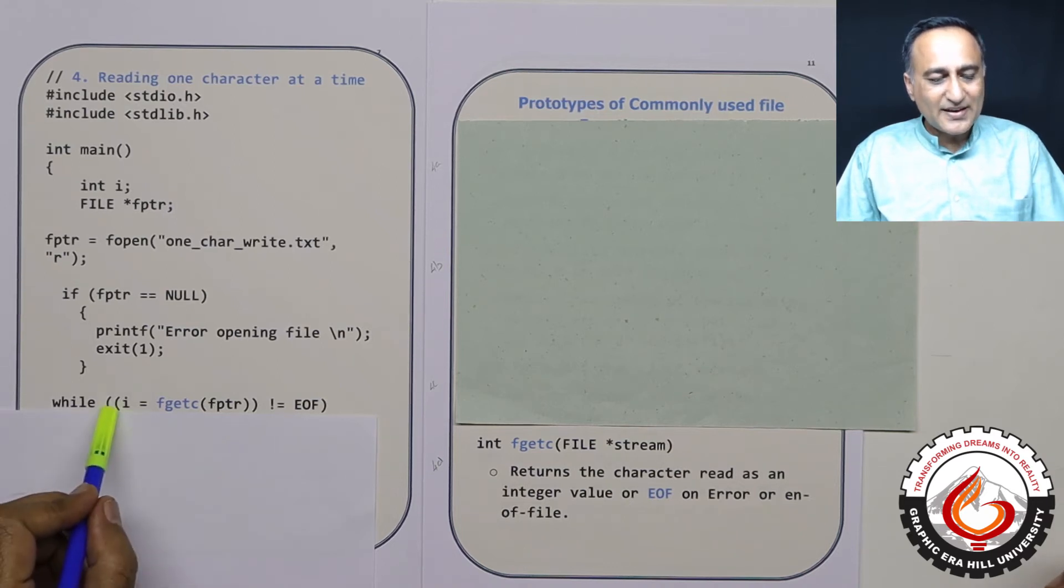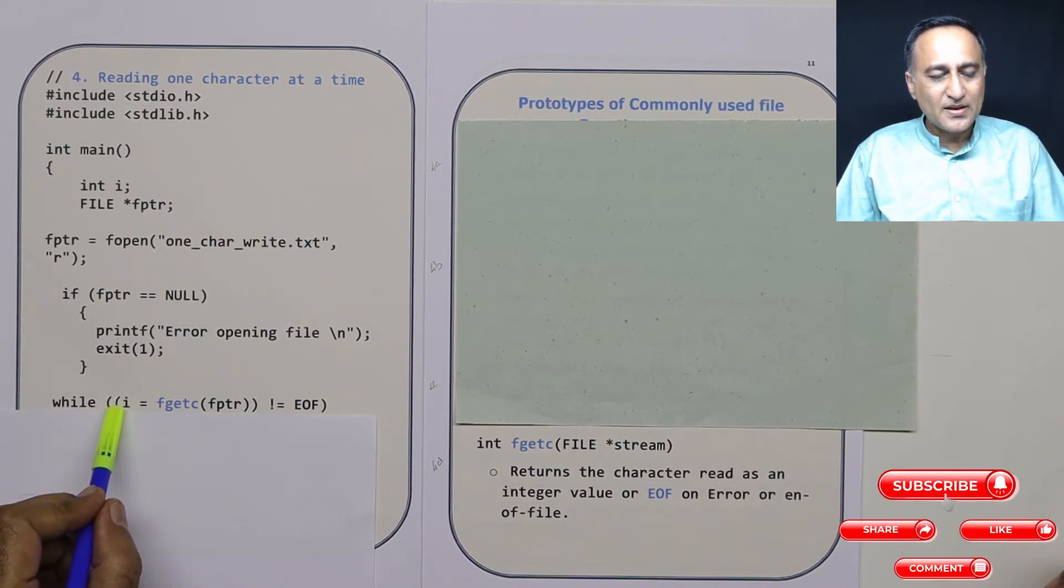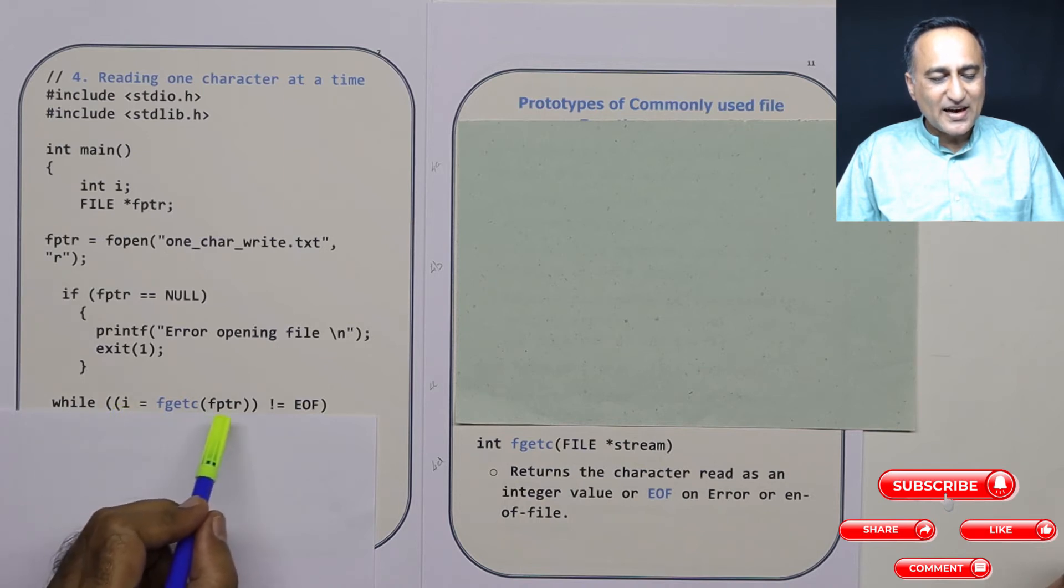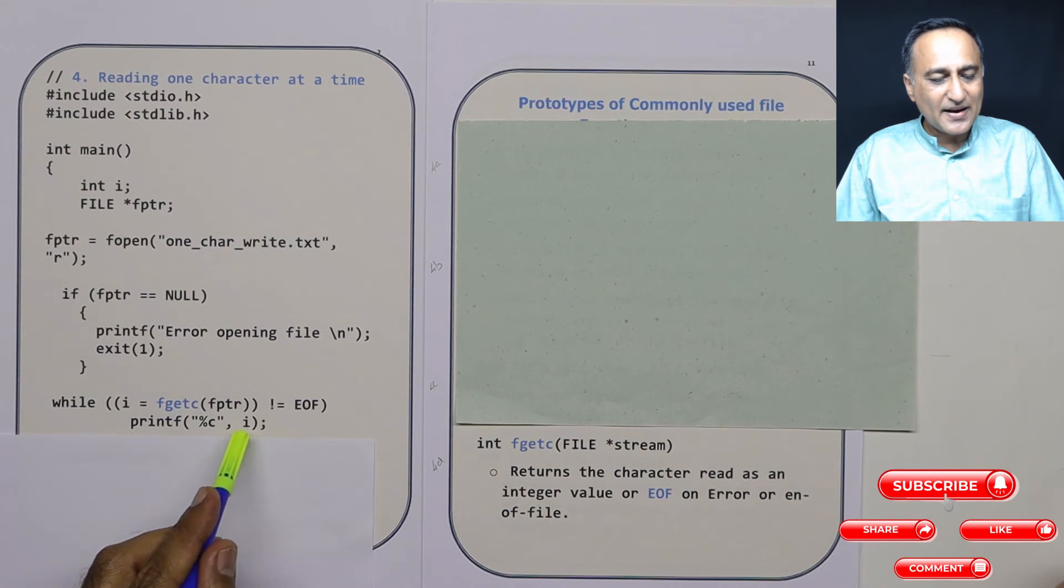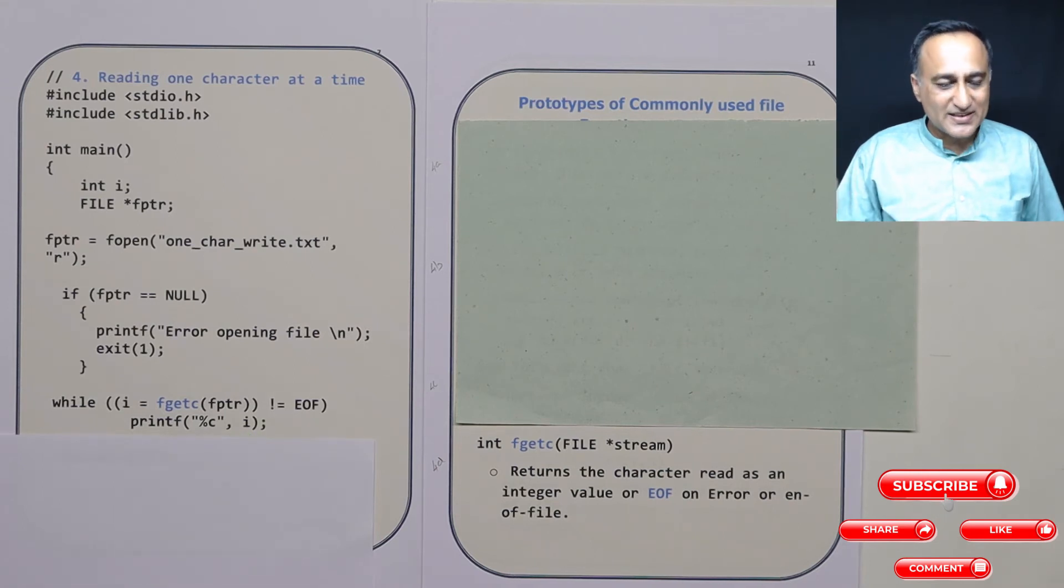Using fptr to fgetc I am reading character by character. The ascii value of that character is assigned to i, and as long as I have not reached end of the file I am continuing to read one character at a time. As I read a character using %c and i, I am printing that character on the screen.